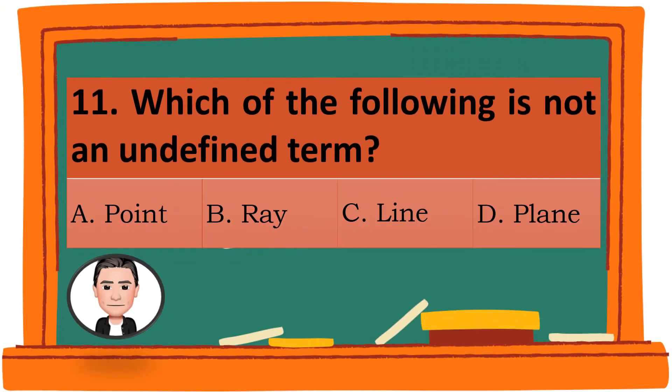Question 11. Which of the following is not an undefined term? A. Point. B. Ray. C. Line. D. Plane. The correct answer is B. Ray.